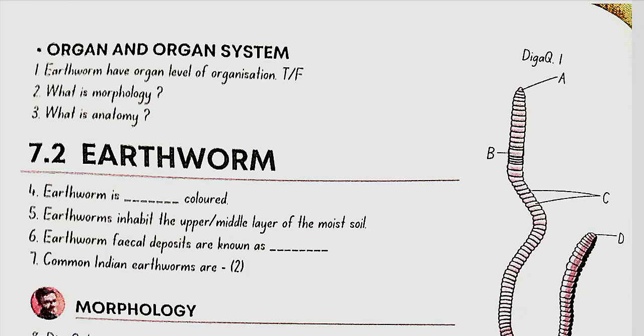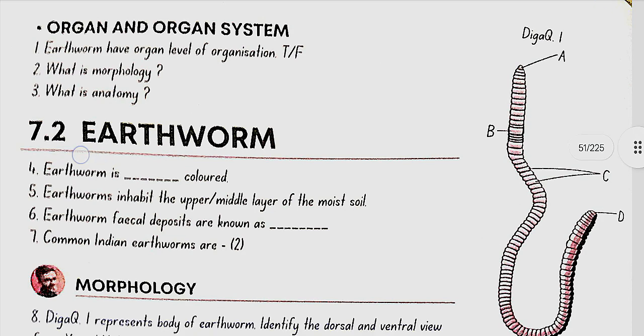Organ and organ system. Earthworms have organ level of organization — no, this is false. What is morphology? The study of form or externally visible features. What is anatomy? The study of morphology of internal organs in animals.